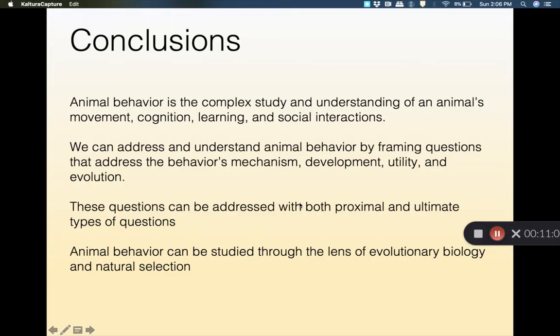And these questions can be addressed with both proximal and ultimate types of questions. So the proximal might be a specific mechanism question. How do birds create a specific vocalization compared to an ultimate type of question, which is how does birdsong develop, for example, across finches?